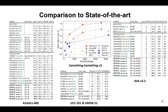We pre-train student models on Kinetics 400 and evaluate MVD on various challenging downstream video datasets, including video recognition datasets: Kinetics 400, Something-Something V2, UCF-101, and HMDB-51, as well as the action detection dataset AVA. Compared with previous supervised and self-supervised methods, our method achieves state-of-the-art performance.